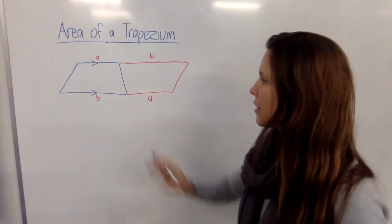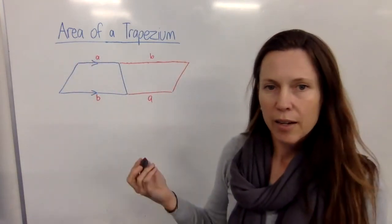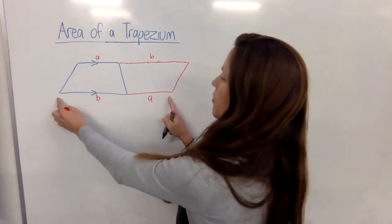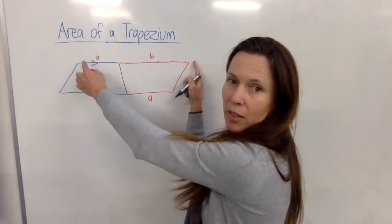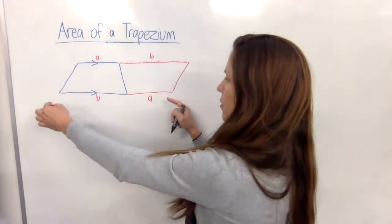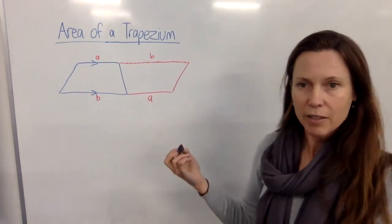Now what I've actually made is one giant parallelogram now. Can I be sure? Yes, the bottom, the base is A plus B long and the top is also A plus B long, so they're both the same length. So I've made a huge parallelogram.